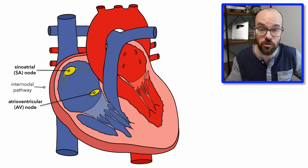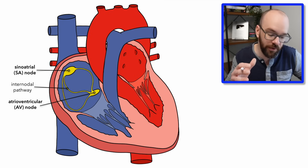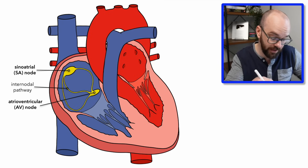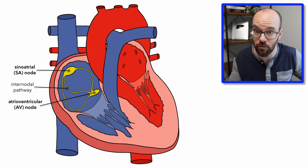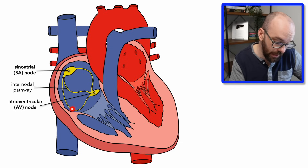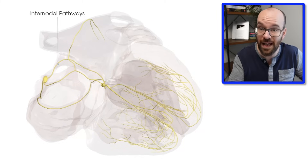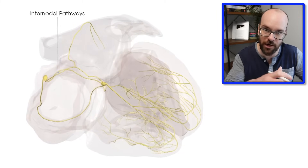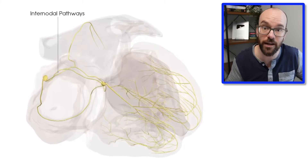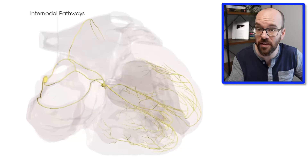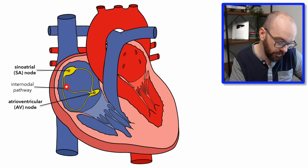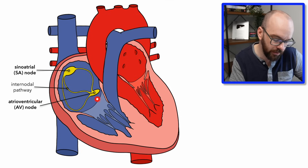Next, the internodal pathway — how the signal transmits from the SA node to the AV node. The internodal pathway has three branches, all passing through the right atrium. Looking at the Anatomage images we can see these are actually three-dimensional, running through the right atrium. The SA node depolarizes, sends a signal through the internodal pathway to the AV node, and that depolarizes the right atrium.